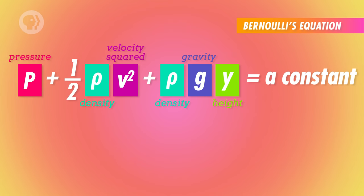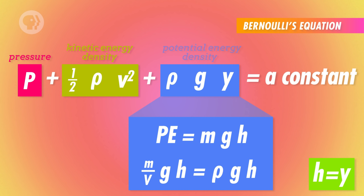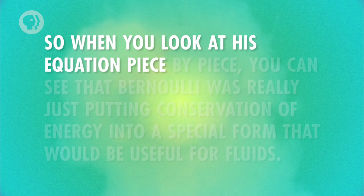There are three forms of energy in Bernoulli's equation. First, pressure times volume — when a fluid applies pressure and moves the volume of fluid downstream, it's doing work, so this is a form of energy. Dividing by volume leaves just pressure. Second, kinetic energy: half the fluid's density times its velocity squared — the kinetic energy density. Third, the potential energy from gravity: density times g times height — the potential energy density. Dividing everything by volume makes it easier to talk in terms of density rather than mass when dealing with fluids.